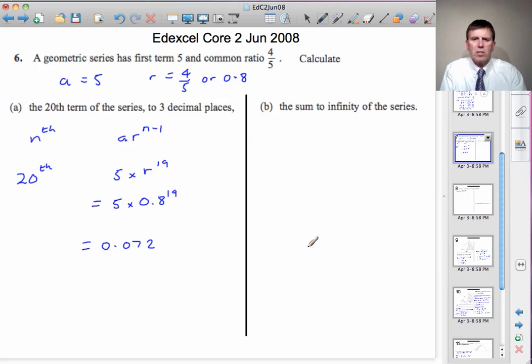Second part of the question. Find the sum to infinity of the series. Here we need the formula for the sum to infinity of a geometric series, and that's A divided by 1 minus R.